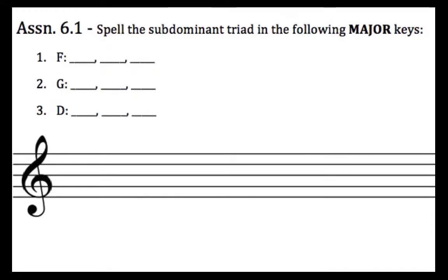If we put the key signature down here and spell an F major scale, we can see that the fourth scale degree is B flat. And if we build a snowman on top of B flat, we get the notes that they're looking for: B flat, D, and F. Let's do another one, number two.